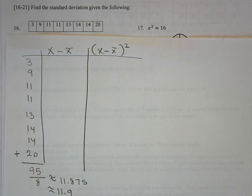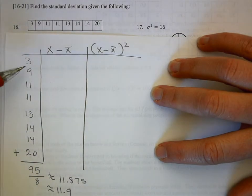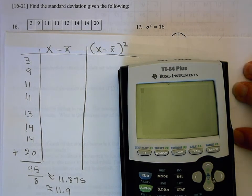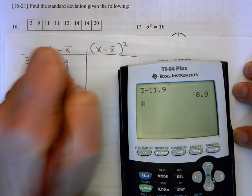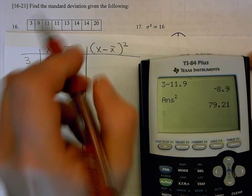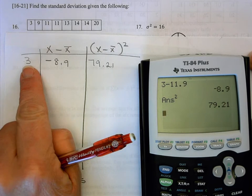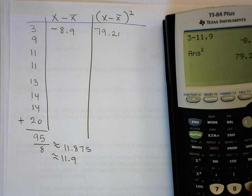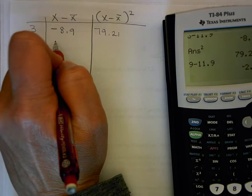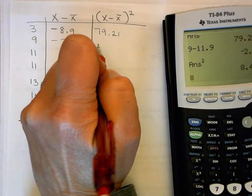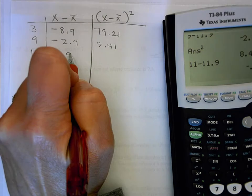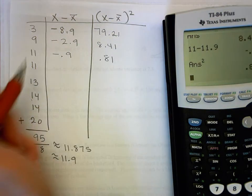To find the standard deviation I need to calculate x minus x-bar for each value and then square those differences. So I subtract 11.9 from each number and square the result: 3 minus 11.9 squared, then 9 minus 11.9 squared, then 11 minus 11.9 squared — and since there's another 11 it will be the same — then 12 minus 11.9 and 13 minus 11.9, both squared.